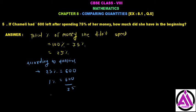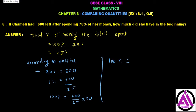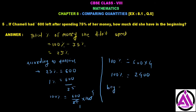Multiply both sides by 100, so 100% is equal to 600 upon 25 into 100. So 25 goes into 600, giving 600 into 4, so 100% is equal to 2400. This means in the beginning, Chamele had 2400 rupees.